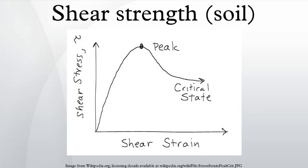Undrained strength is commonly adopted in limit equilibrium analyses where the rate of loading is very much greater than the rate at which pore water pressures generated due to the action of shearing the soil may dissipate. Examples include rapid loading of sands during an earthquake, or the failure of a clay slope during heavy rain, and it applies to most failures that occur during construction. As an implication of the undrained condition, no elastic volumetric strains occur, and thus Poisson's ratio is assumed to remain 0.5 throughout shearing. The Tresca soil model also assumes no plastic volumetric strains occur, which is of significance in more advanced analyses such as finite element analysis.